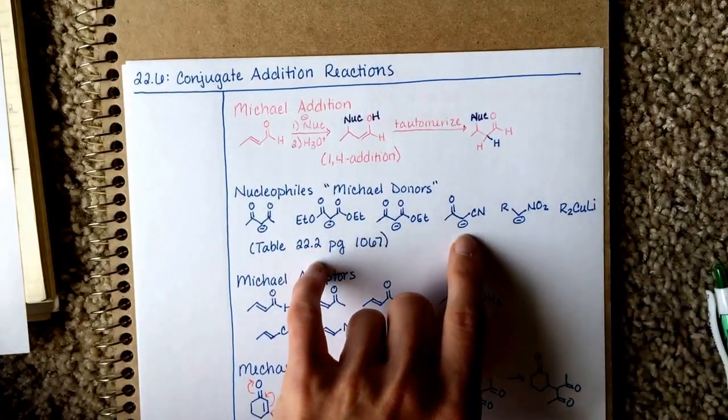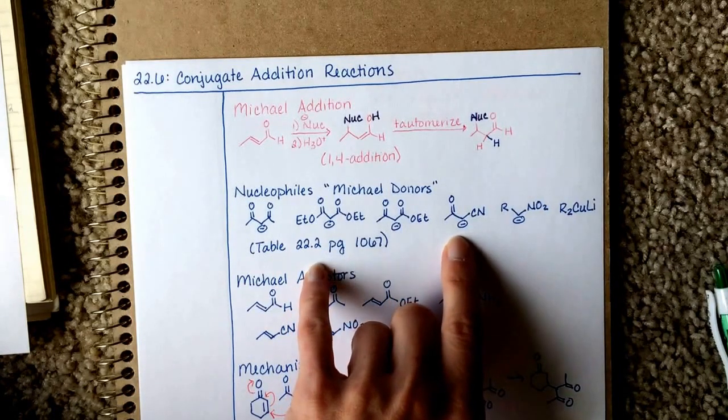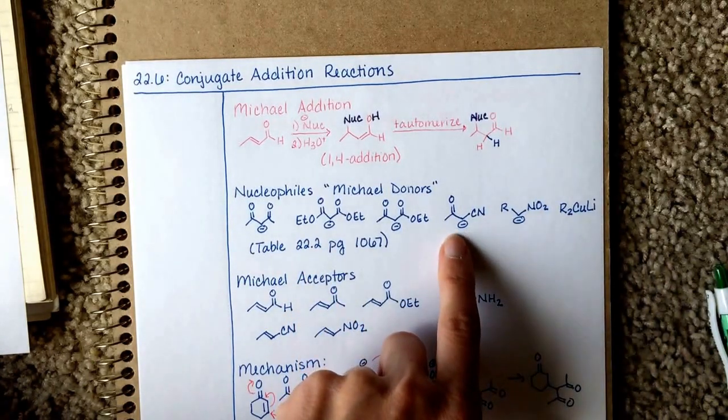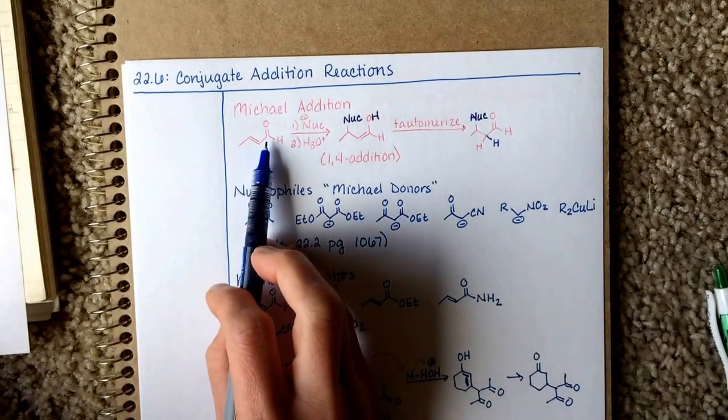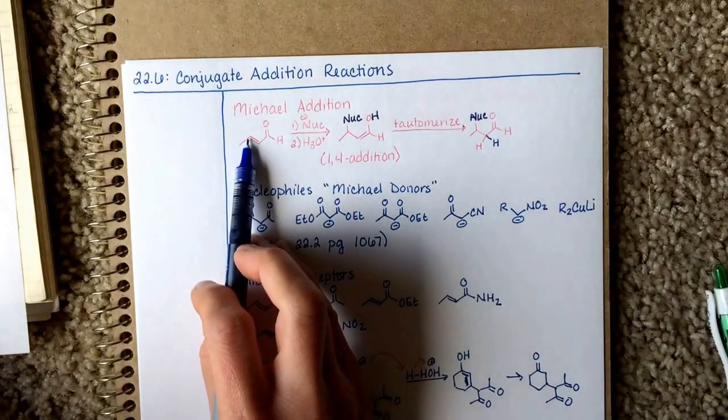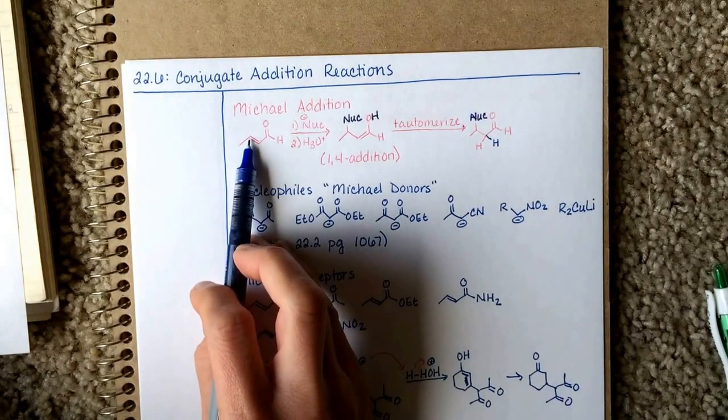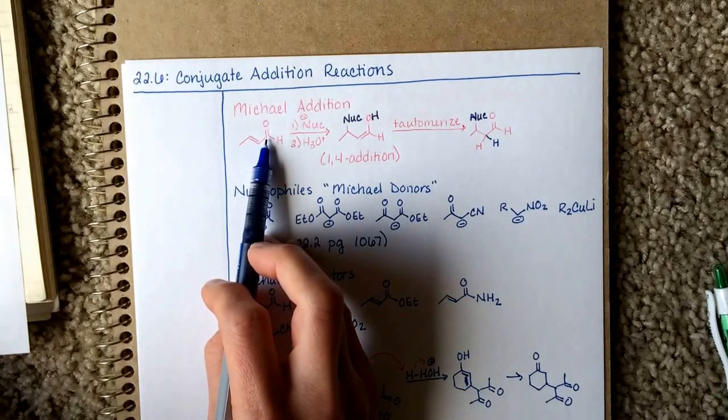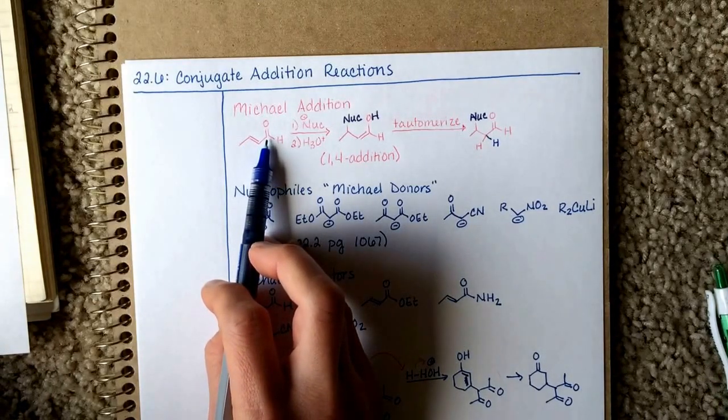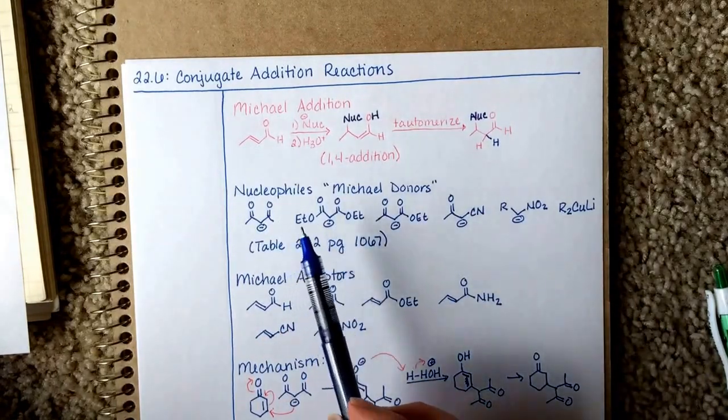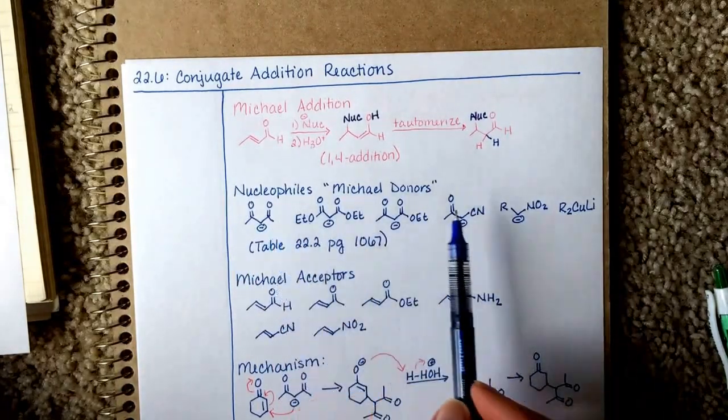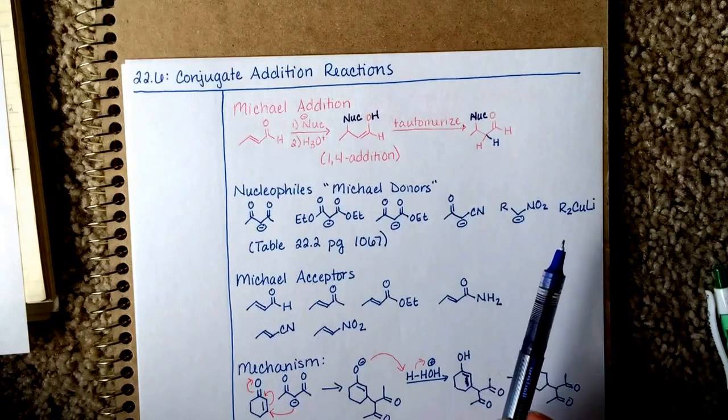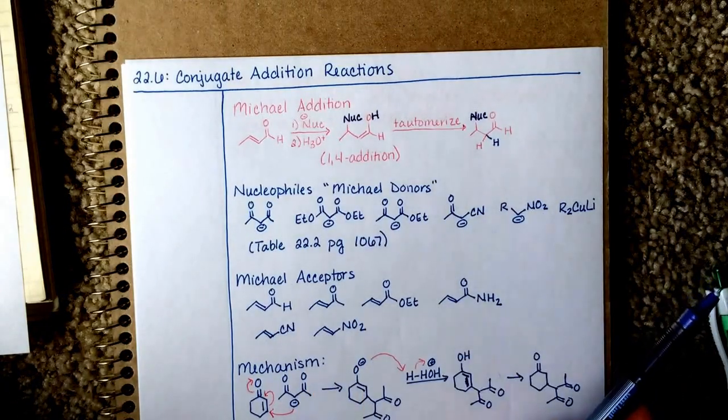The enolates of aldehydes and ketones are very strong nucleophiles, and as you know, the enolates of aldehydes and ketones attack the carbonyl carbon directly. They don't do any work out here at the beta position. They're way too strong of a nucleophile for that. They go here and they do the aldol reaction instead. So the enolate of an aldehyde or ketone could never be used in a Michael Addition reaction. It is used in the aldol condensation.